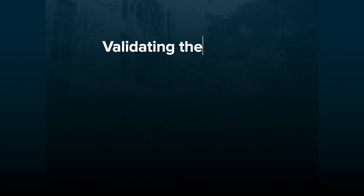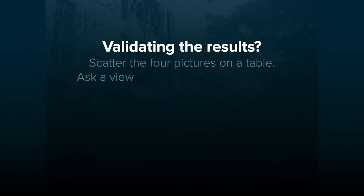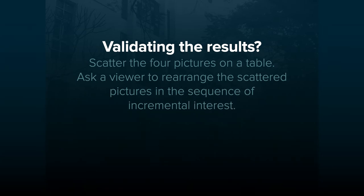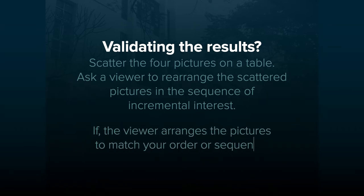How to validate the results: scatter the four pictures on a table and ask a viewer to rearrange the scattered pictures in the sequence of incremental interest. If the viewer arranges the pictures to match your order or sequence, then consider it as correct.